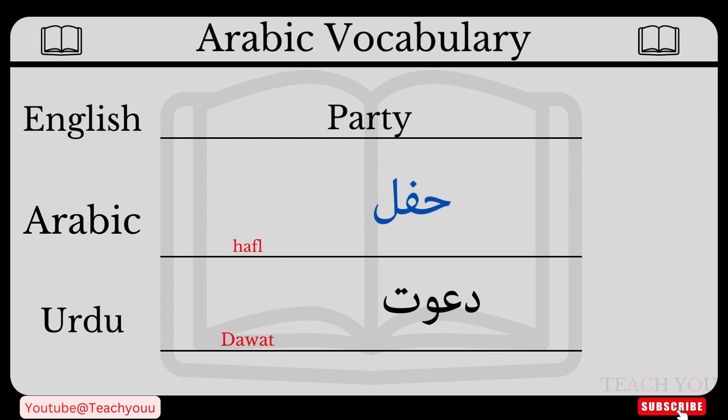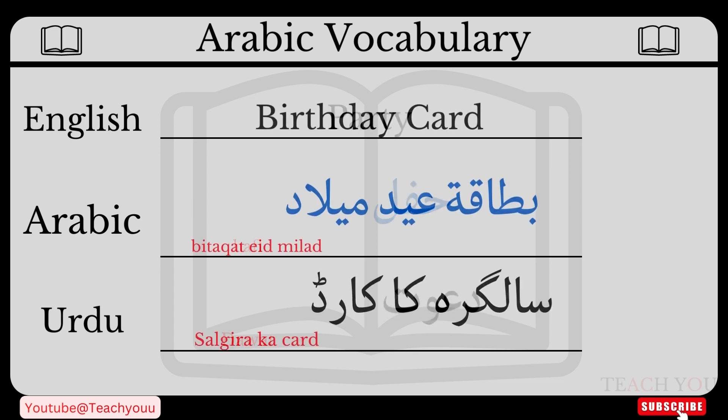Party. In Urdu: DAWAT. In Arabic, how can we say it? HAFLA. In Arabic we say HAFLA. Let's repeat: Party — DAWAT — HAFLA.